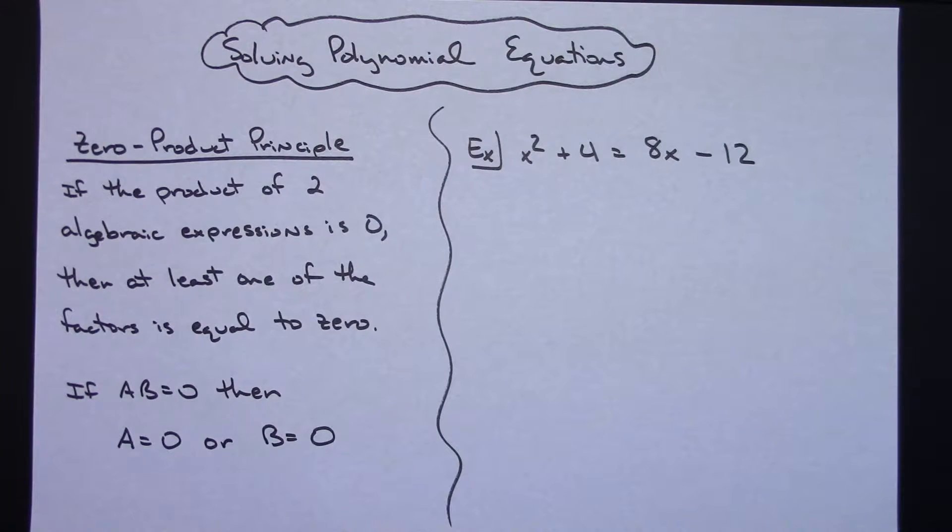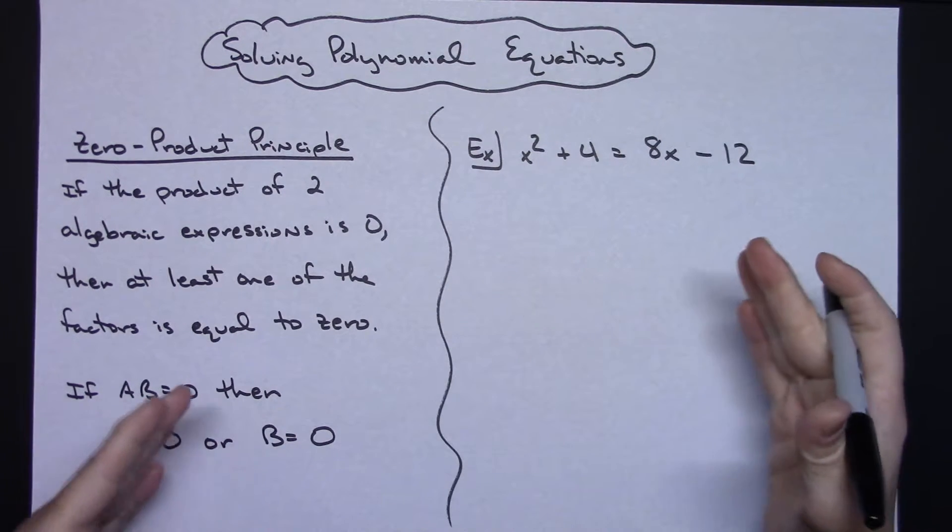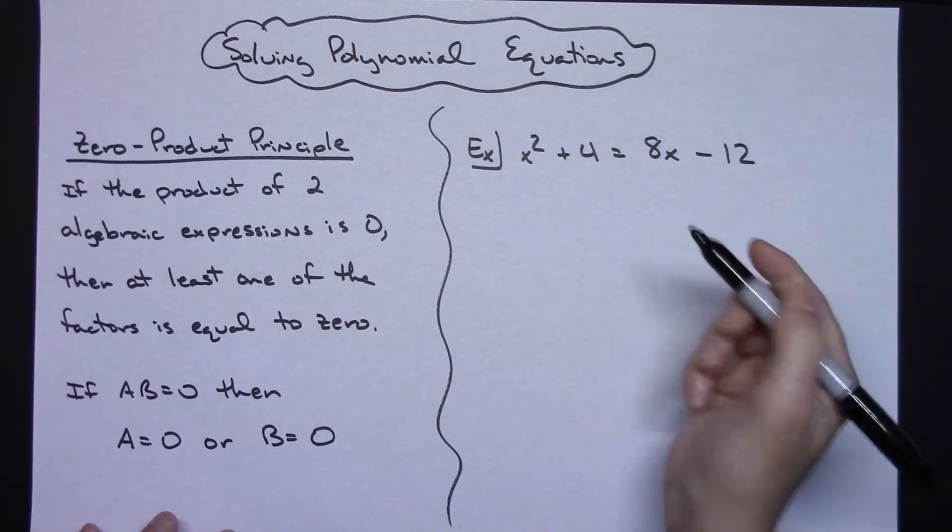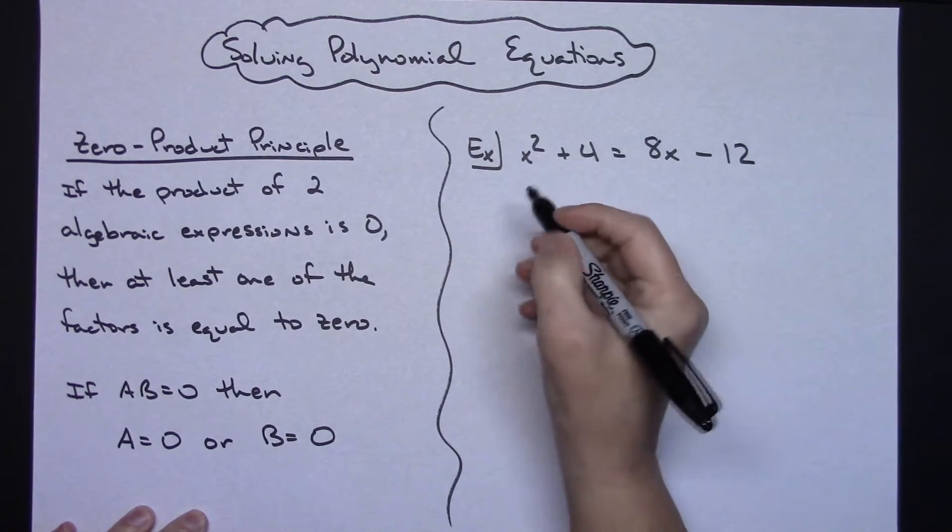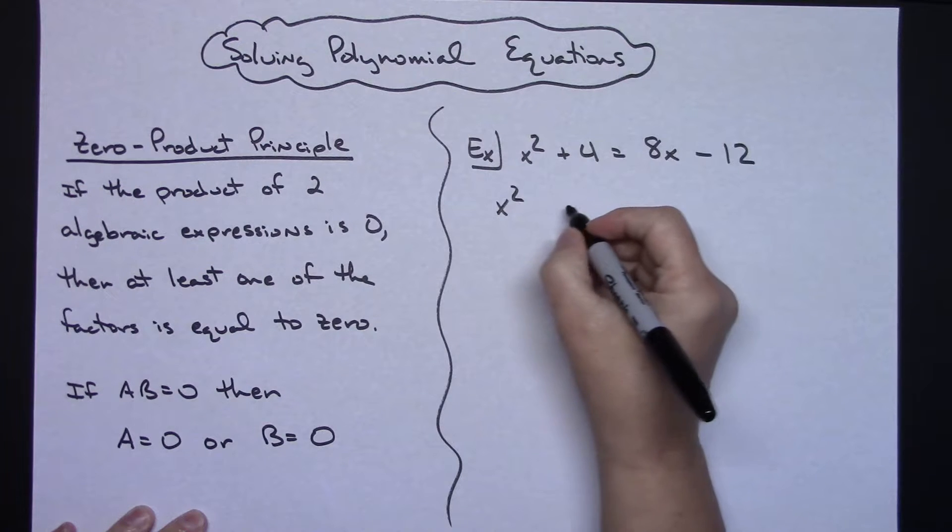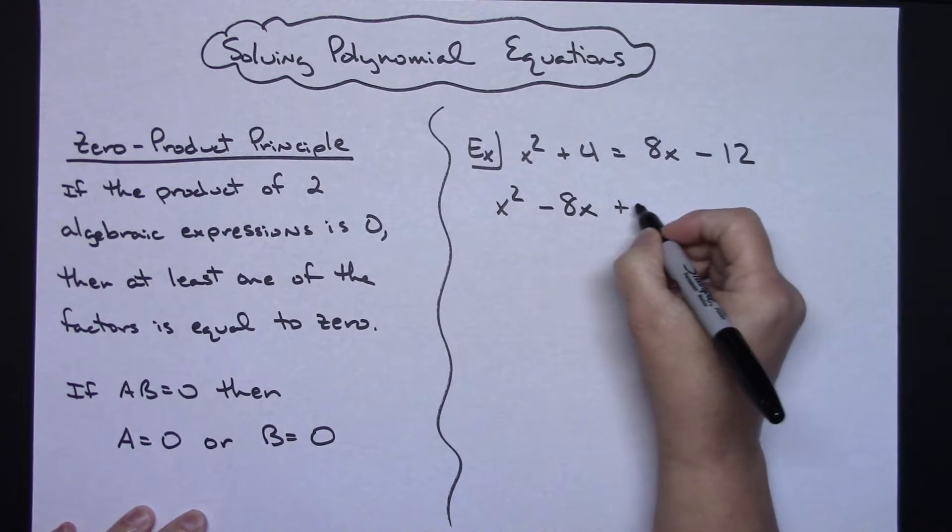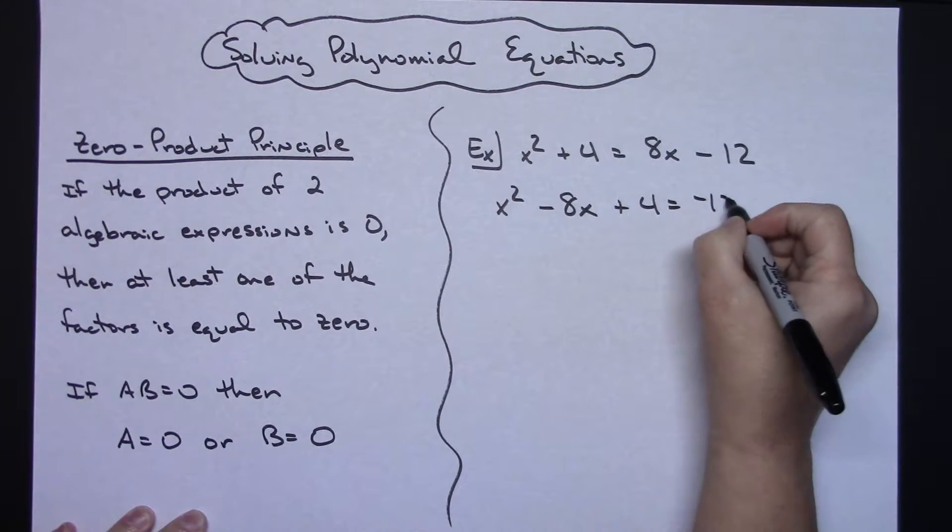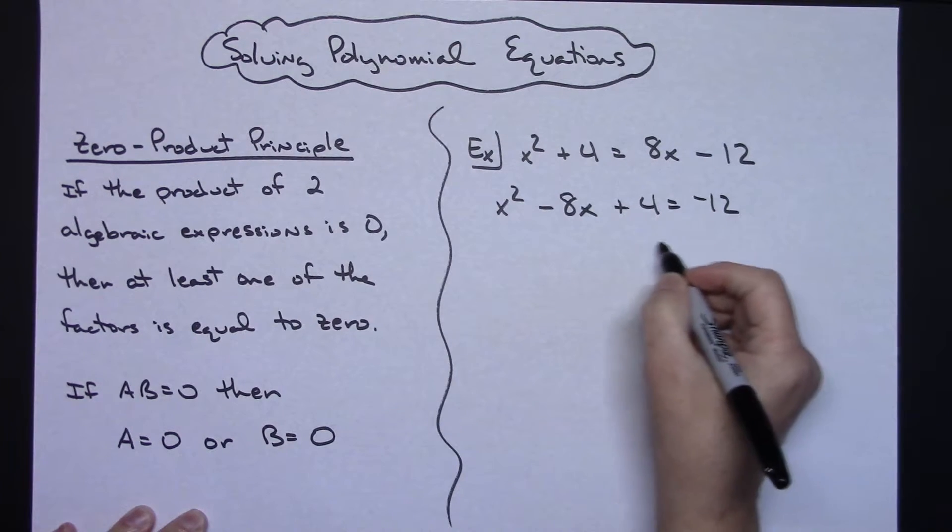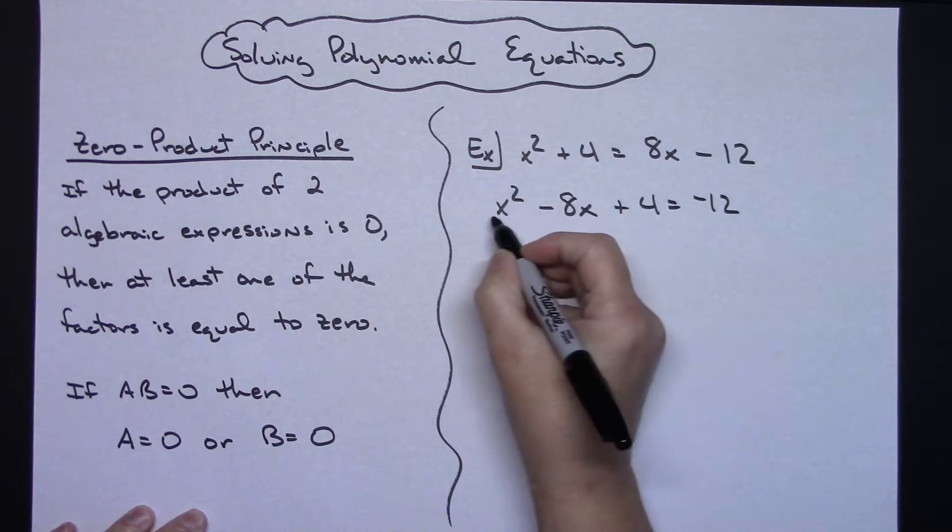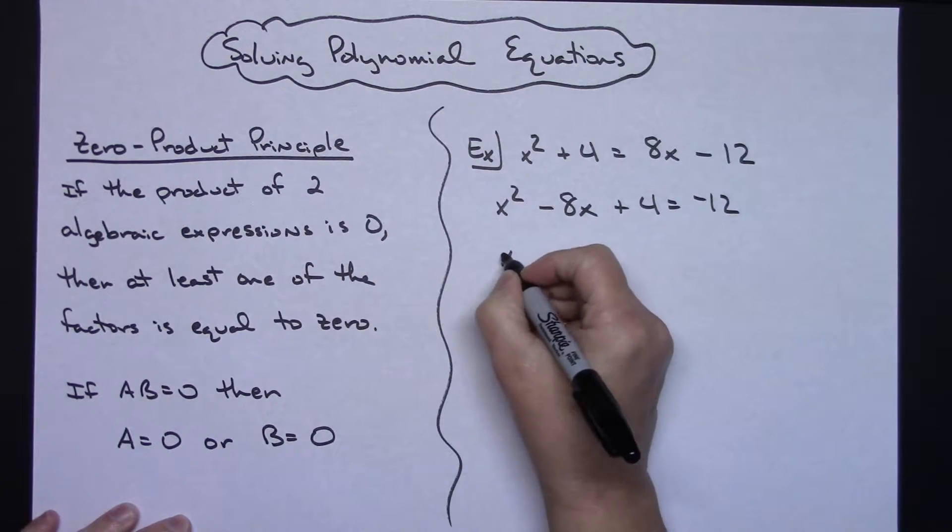When I do that, I'm going to choose to set it up so that my quadratic is in the order that I want it to be. So I'm going to subtract 5x, and I want that term to be next. Then I'm going to show the plus 4 equals that negative 12. Now I can add 12 to both sides, and then I've got my quadratic set up in the form that I want it to be.